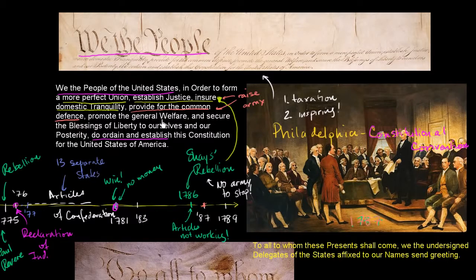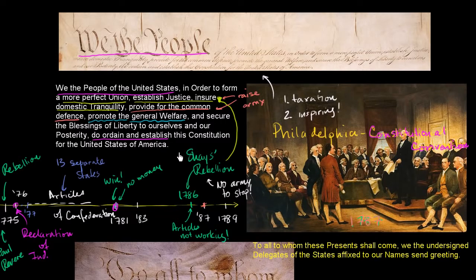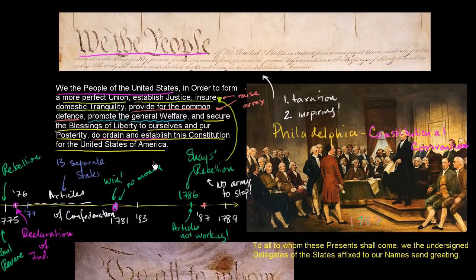There's another phrase: promote the general welfare. When people argue about constitutionalism and what gives the federal government the right to do things, one of those phrases is the general welfare clause — whether it's health care or anything else, things the central government does that promote the general welfare. And then there's the inspiring poetry: 'secure the blessings of liberty to ourselves and our posterity.' We do ordain and establish this Constitution of the United States of America. We'd been calling ourselves that since the Declaration, but now it's signifying we're one nation, not just 13 different states. It's only under this Constitution that we truly become the United States of America.